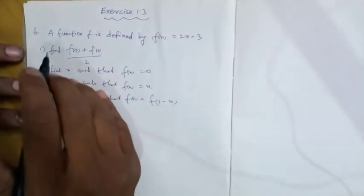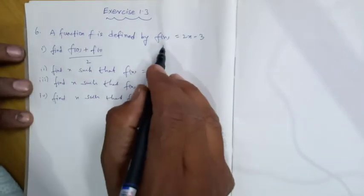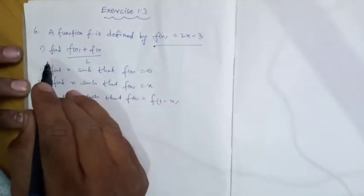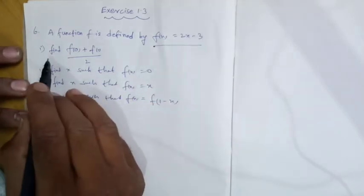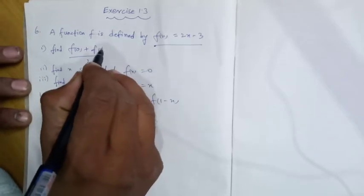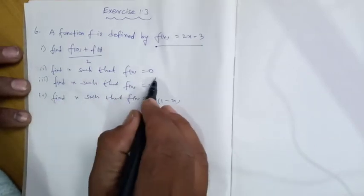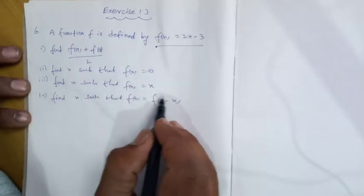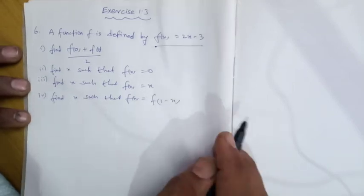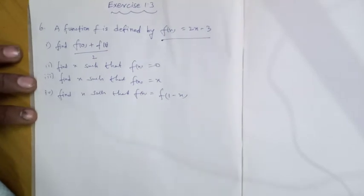Question Number 6: A function f is defined by f(x) = 2x minus 3. First, find f(0) plus f(1) divided by 2. Second, f(x) = 0. Third, f(x) = x. Fourth, f(x) = f(1 minus x). That means we have 4 sub-questions to find out.